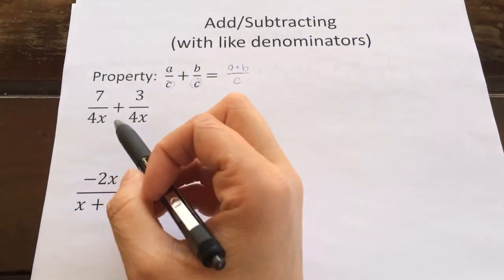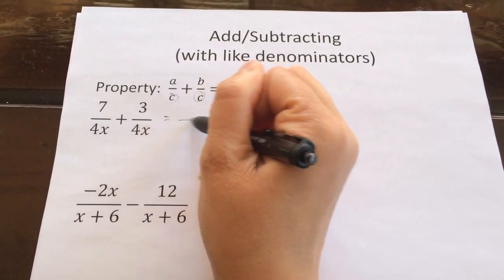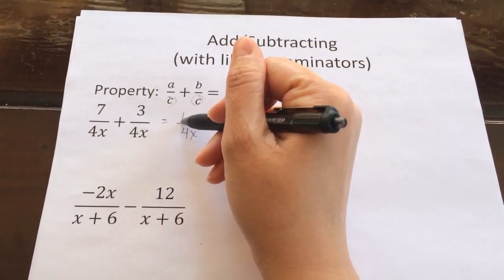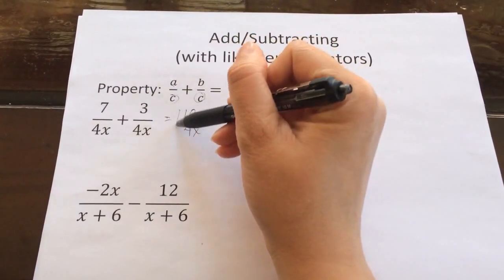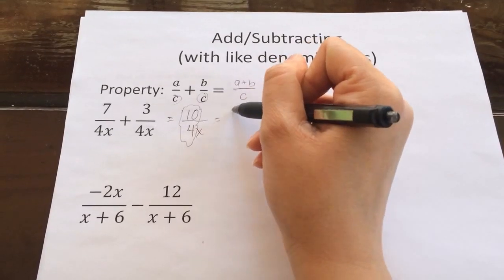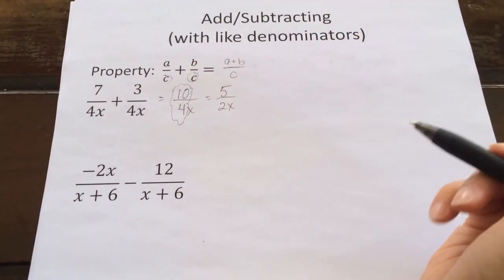So looking at this rational function here, we notice that they have the same denominator, so we will keep that same denominator, and we will add the numerators to get 10. Now, please recognize that I am allowed to reduce this by 2, so that it will become 5 over 2x for my final answer.